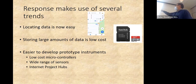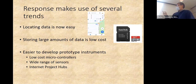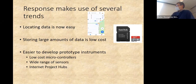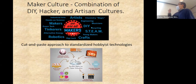Now we can locate ourselves easily. Storing large amounts of data is low cost — a 64 gigabyte chip is tiny, almost impossible to fill with the measurements I'm doing. We can also develop prototype instruments using low-cost microcontrollers. I've been using the Arduino; there's also the Raspberry Pi. A huge number of sensors are available, and internet project hubs where you can look things up and get ideas for how to make connections.